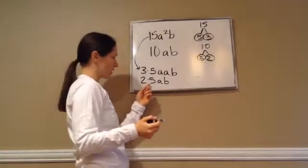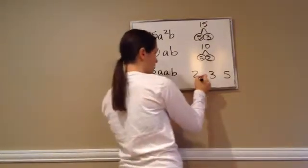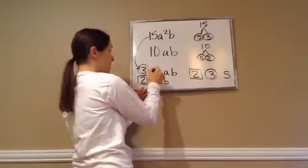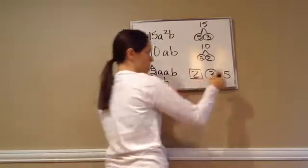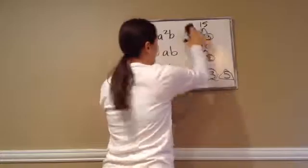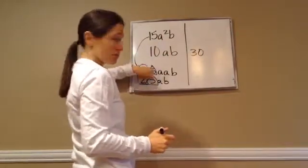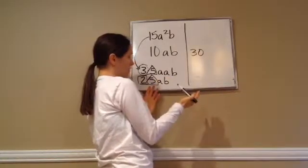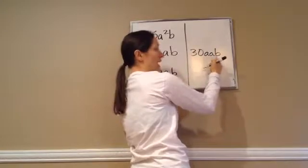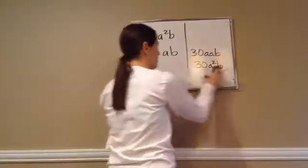For 2s: 15a²b has zero 2s, 10ab has one 2 — so we use one 2. For 3s: one 3 in the first, zero in the second — use one 3. For 5s: one each — use one 5. So 2 times 3 times 5 equals 30 for our number part. Now we do the same thing to the letters. We have two a's versus one a — the most is two a's. We have one b and one b — use one b. So the answer is 30a²b.